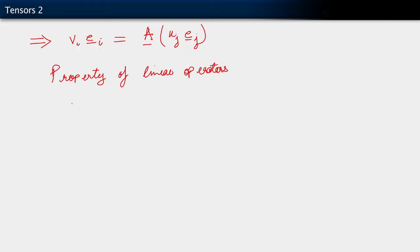And that property is that now if I go back to writing V_i E_i here, I can pull that component U_j out because U_j is just a scalar. So I can write this as U sub J, A acting on E_j. Because of the fact that A is a linear operator and because of the fact that U is a vector.